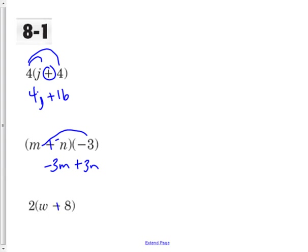Change your subtraction to addition of the opposites, so we'll add negative 8. So 2 times w is 2w, and 2 times negative 8 is plus negative 16. That's how I'd like to see your answer, using addition rather than subtraction.